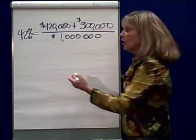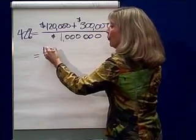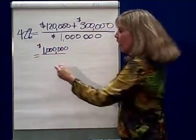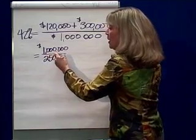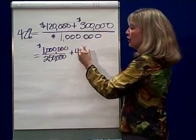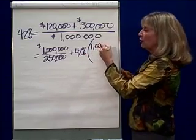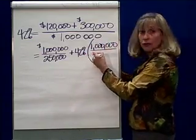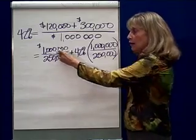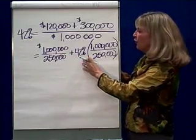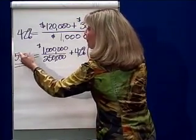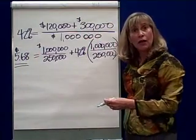Using the gross margin approach, we take the production cost per unit — production costs for the year are one million dollars spread over 250,000 cows inspected each year — plus the markup percentage of 42% times the production cost per unit, which is one million divided by 250,000. So that's $4 plus 42% of $4. The price we should charge to inspect a head of cattle is $5.68.